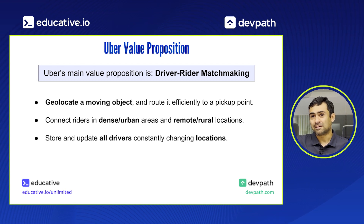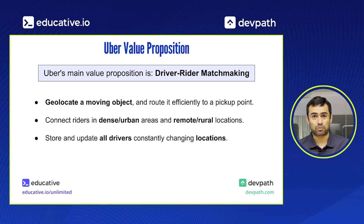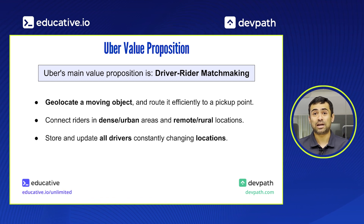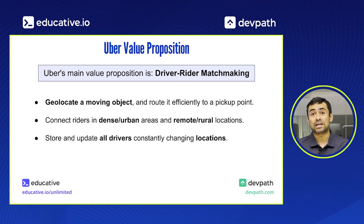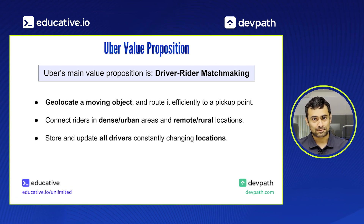For example, if someone lives in a rural area and is looking for a ride to the airport — which would probably take an hour — you're searching in a radius of maybe 20, 30, or 40 miles. So the problem is very interesting and complicated.